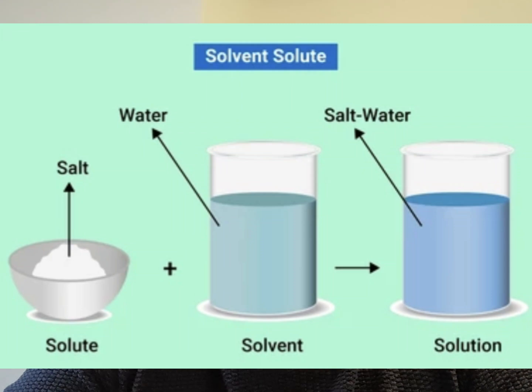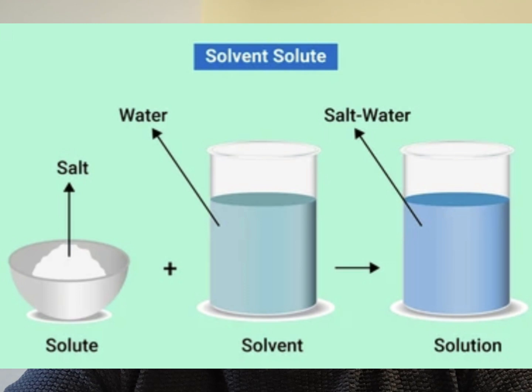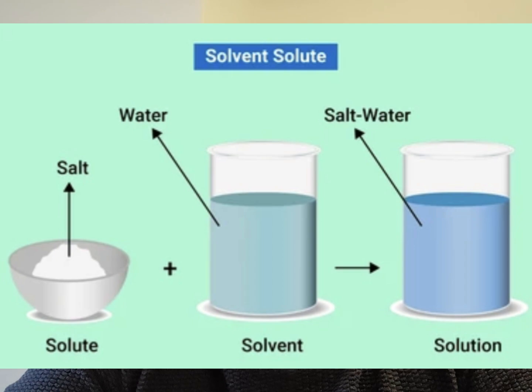According to the dictionary, a solvent is a substance that can dissolve a solute to form a solution. This solution is called a homogeneous mixture. So the solvent — in this case water — is the substance that does the dissolving. The salt is the solute, which is the substance that is dissolved, and the solution is the resulting brine mixture. So now we're more familiar with what a solvent is, I'm going to list some of the more common types of solvent that we can find closer to home.